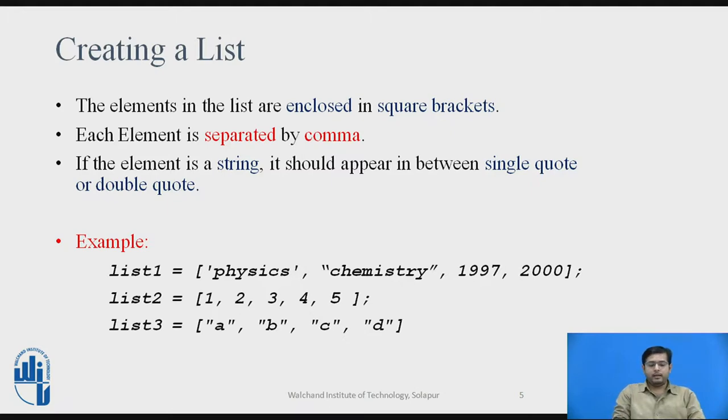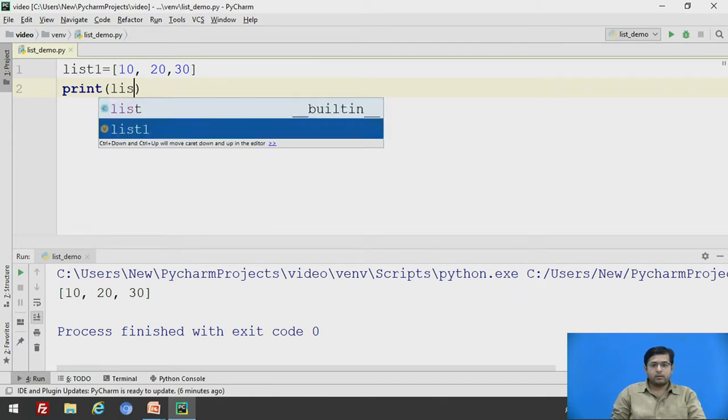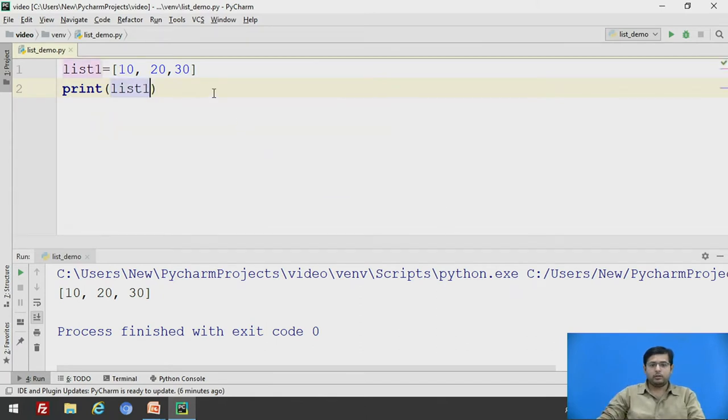We will see an example of creating list and display the list. Say list1 is equal to, in square brackets, we will define some number, say 10, and it is separated by commas. So, 10, 20, 30, and we will print the list using print function. So, list1, we will just run this code. Here in the element, we have all taken integer values. So, this is the output of the list.